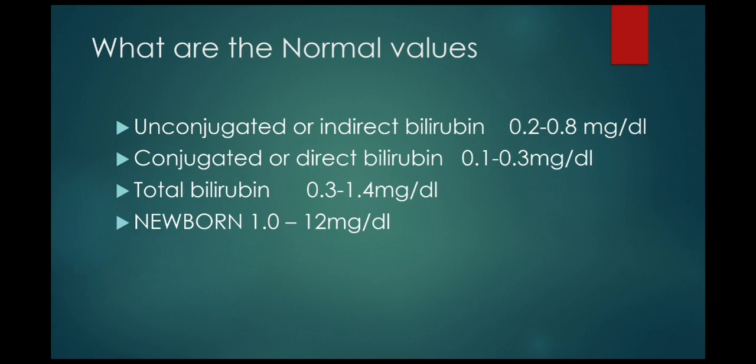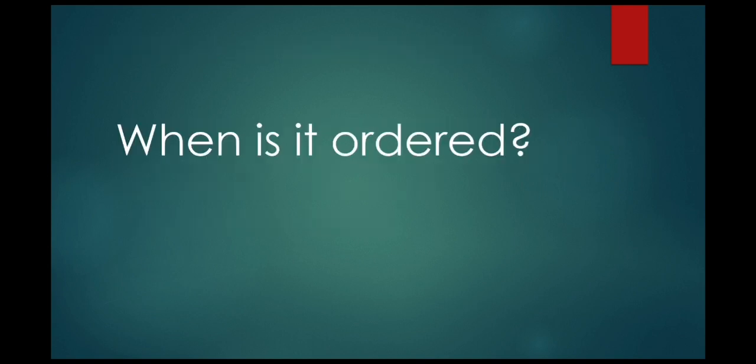The normal value of conjugated or direct bilirubin is 0.1 to 0.3 milligrams per deciliter. Total bilirubin: 0.3 to 1.4 milligrams per deciliter. In newborns, 1 to 12 milligrams per deciliter is considered normal.